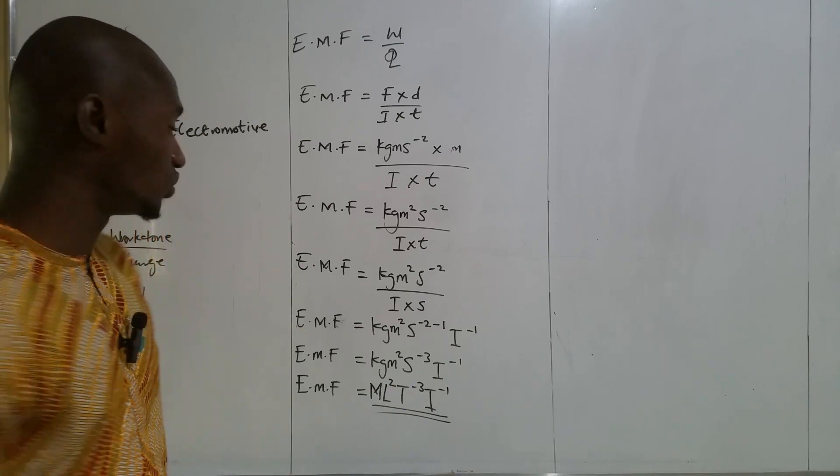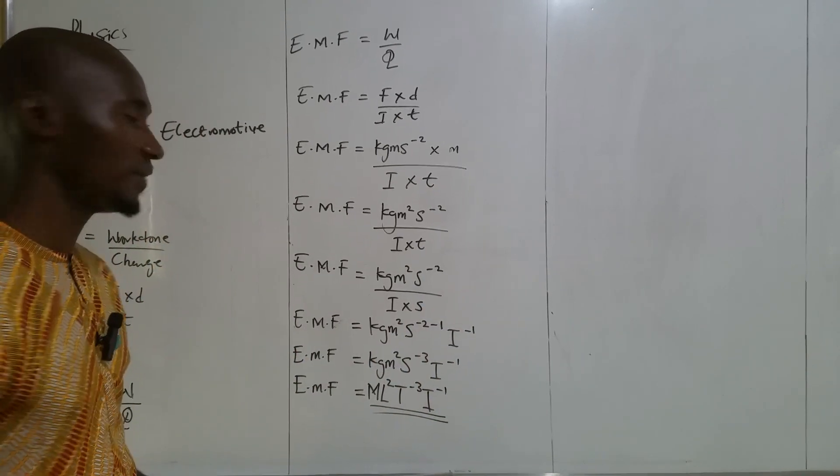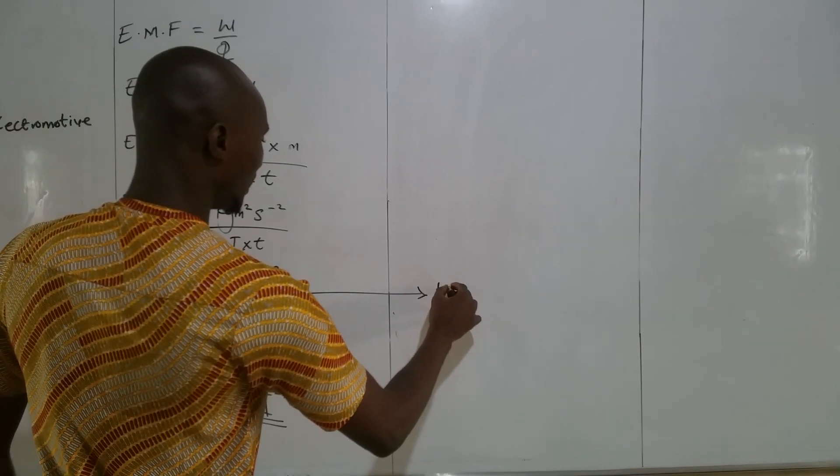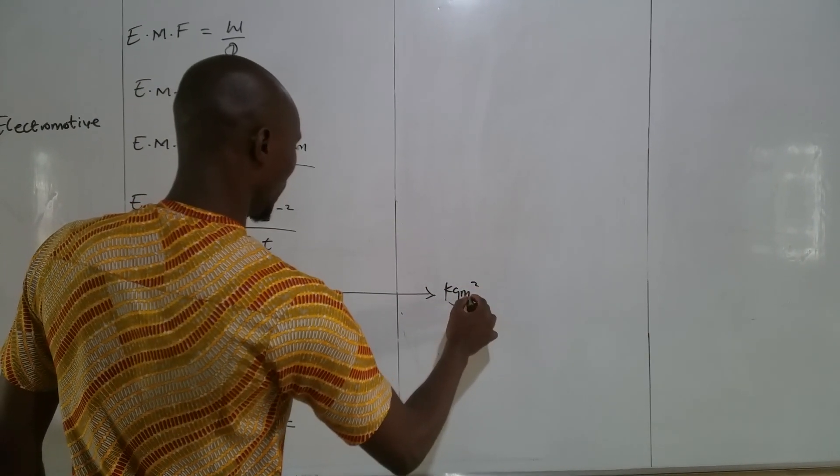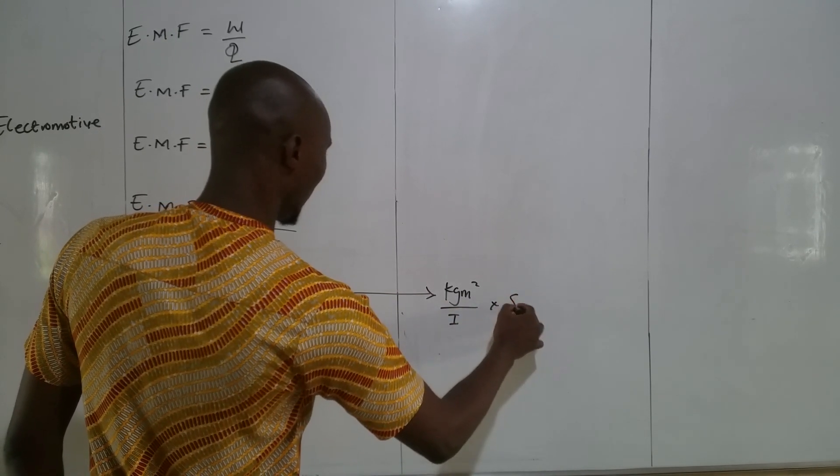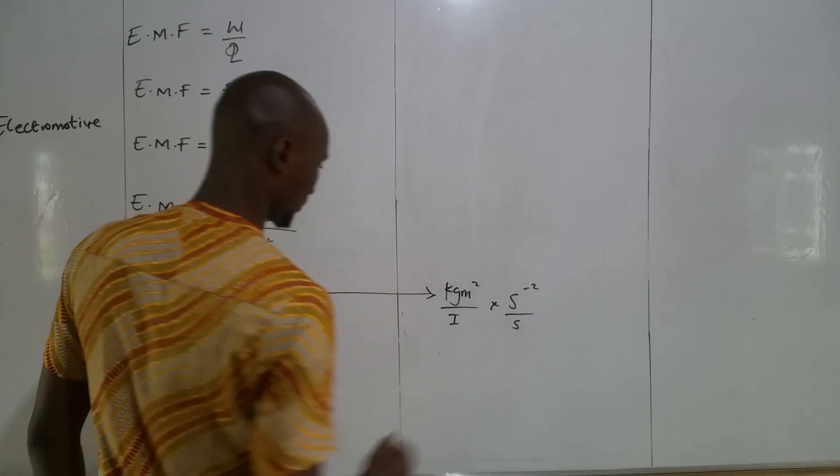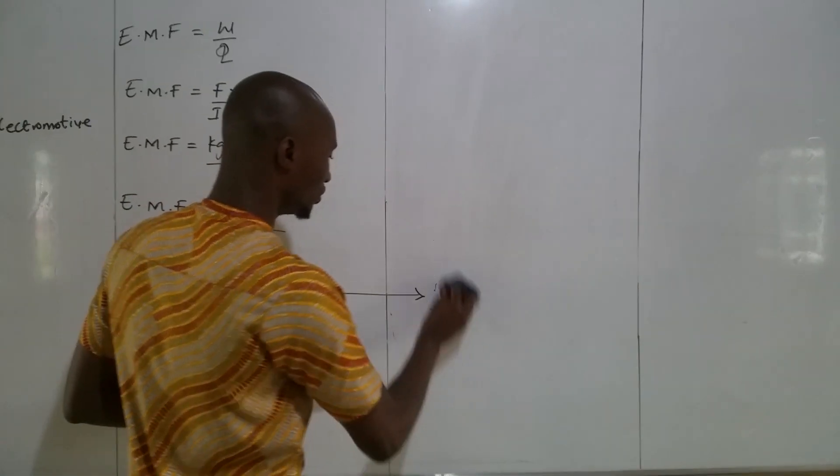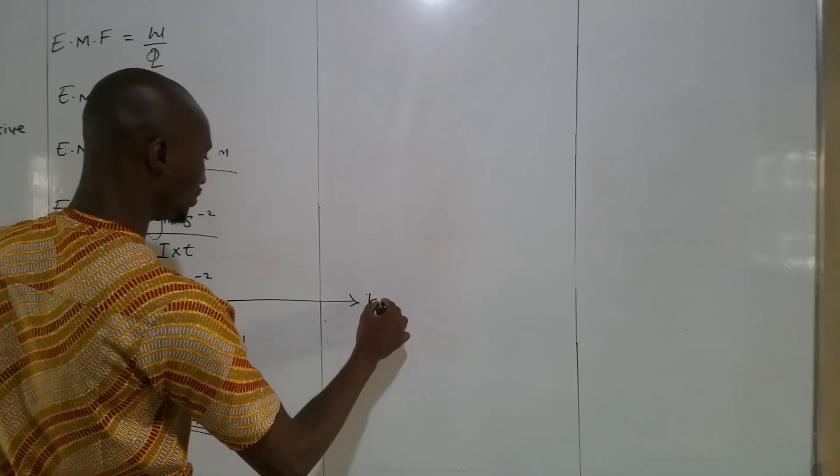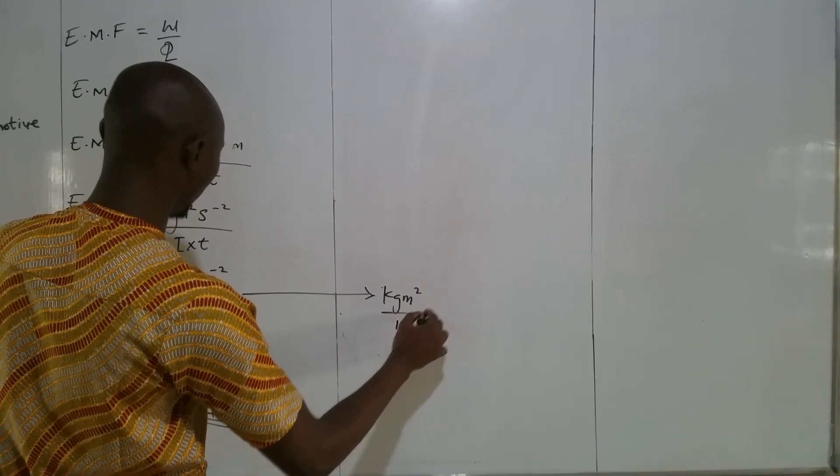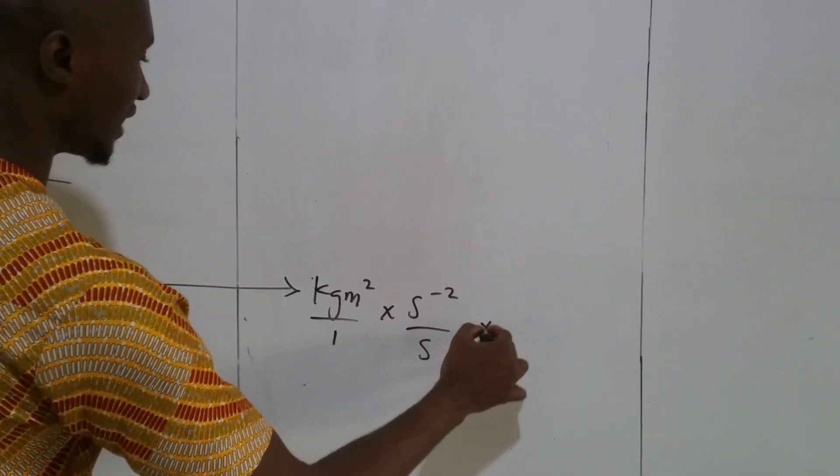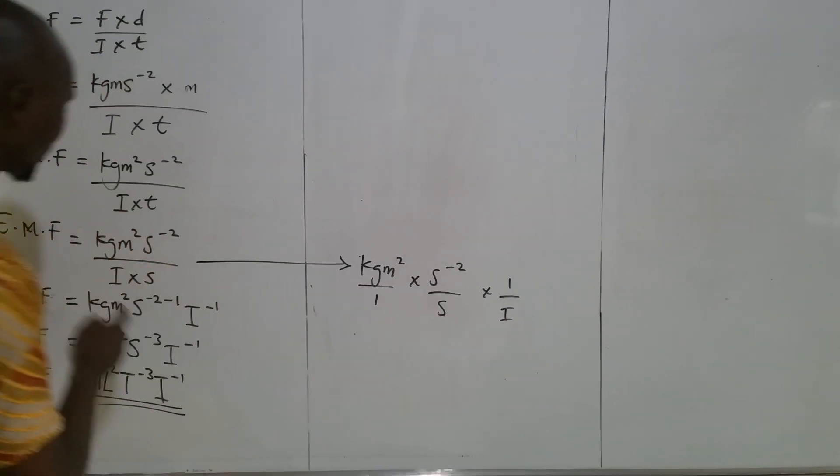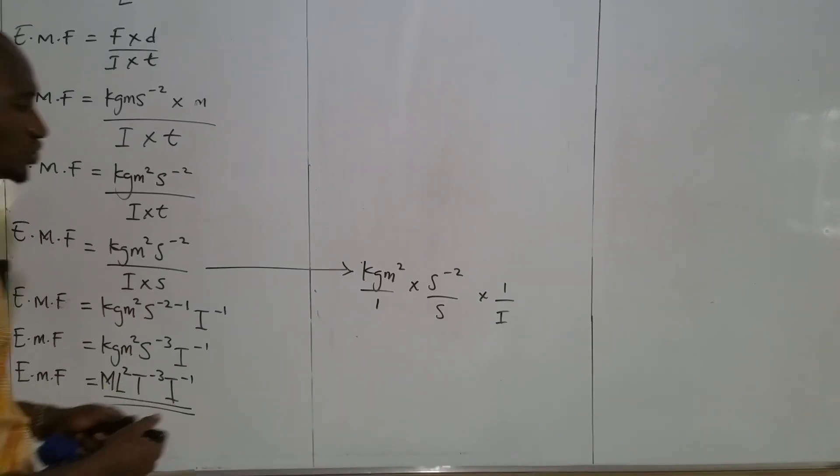Okay, let me do something here for those of you that are confused on how I got to this page. From this point, this is kg m² over I times s⁻² over s. Or to even make it better for you, let me do it this way: kg m² over 1 times s⁻² over s times 1 over I. Because 1 times s will give us s. s times I will give us I times s. So this one becomes kg m² times s⁻² minus 1.